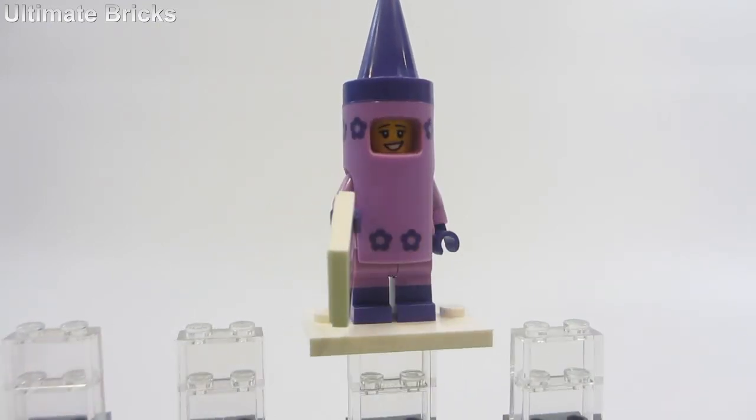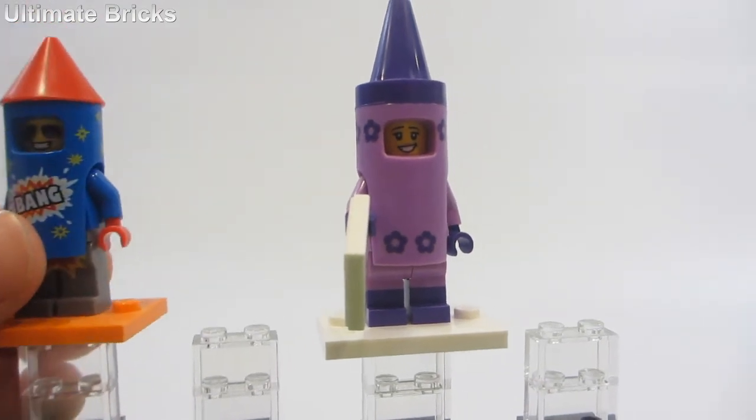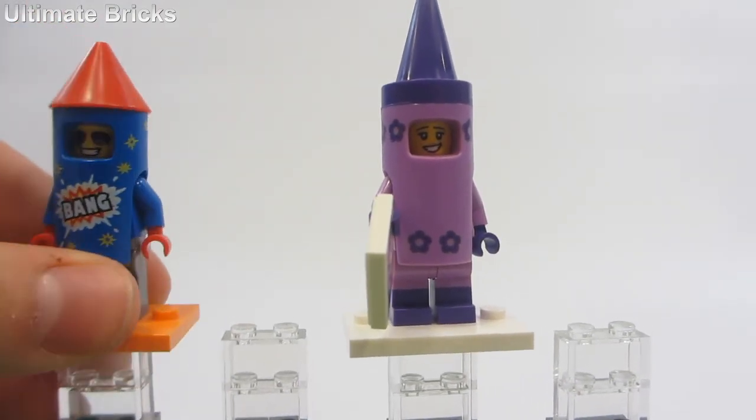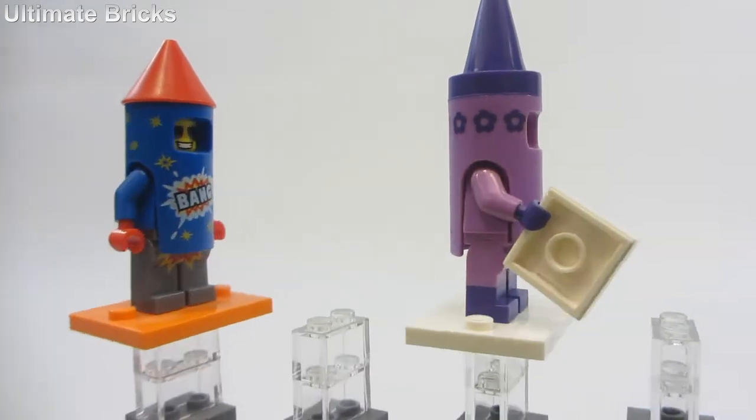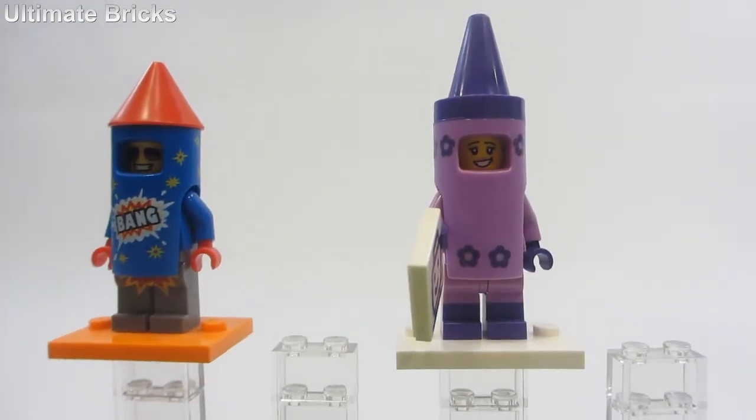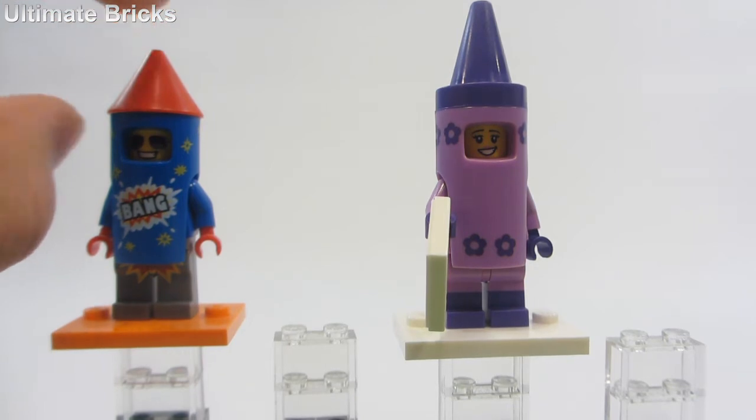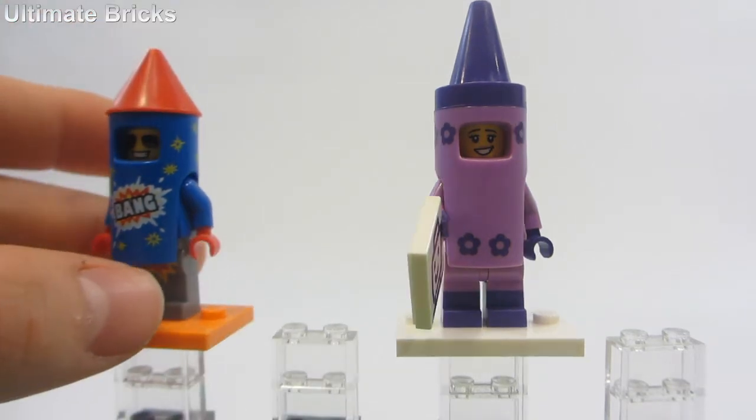And at first, when I first saw this, I thought it was the same mold as our friend, the Bottle Rocket from Series 17. But looking at it, it's actually a little bit shorter, and actually a rocket shape. I thought they just reused the mold, but no.